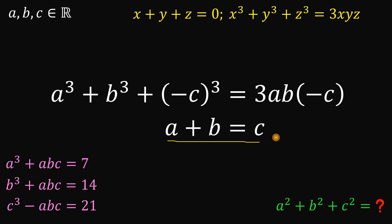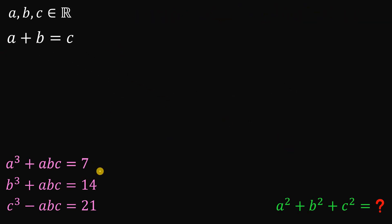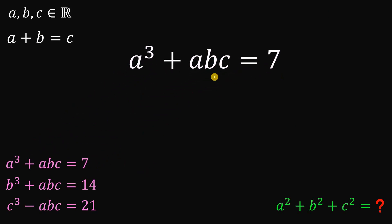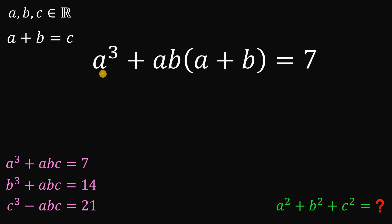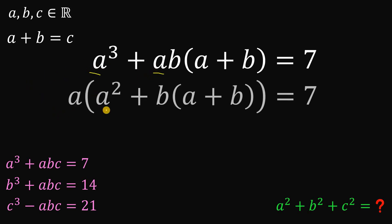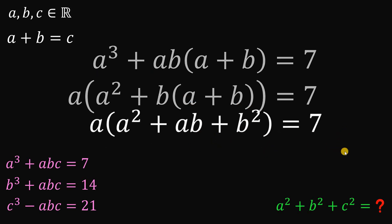Now let's use this result to answer the question. We know a plus b equals c. Using the first equation — a cubed plus abc equals 7 — we replace c with a plus b. Then we factor out a on the left-hand side, giving a multiplied by a squared plus b times a plus b. Distributing b, we get a times a squared plus ab plus b squared equals 7.